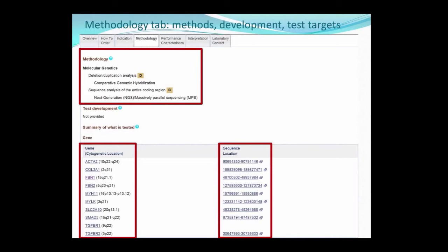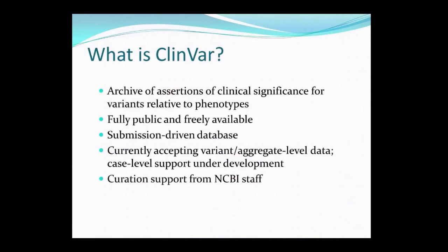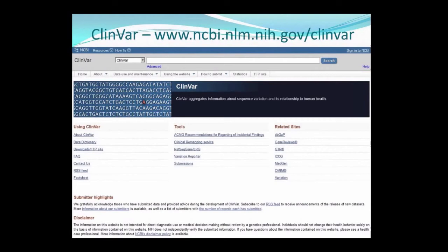After getting the results back, you might need some help interpreting them, and this is where ClinVar comes in. ClinVar is a freely available public archived database of genetic variants and their relationship to phenotype. It's a newer resource, and therefore it's not yet comprehensive. It does contain both short variants and copy number variants, as well as large variants. This is the ClinVar homepage.